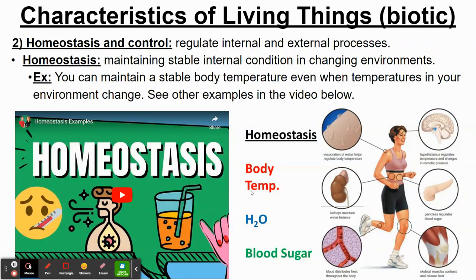If your body temperature or blood sugar change too much from where they should be, you can get very sick, and without intervention, it's possible for the organism to die. Maintaining hydration and blood pH are other things our bodies are constantly working to regulate. Living things are able to maintain stable conditions, and different living things do this in different ways. This is called homeostasis — maintaining stable internal conditions even though your environment changes.